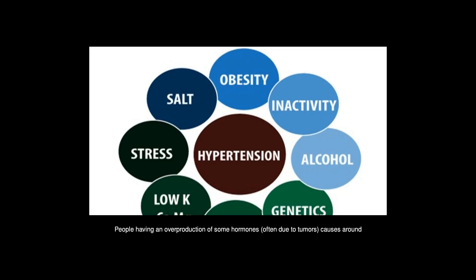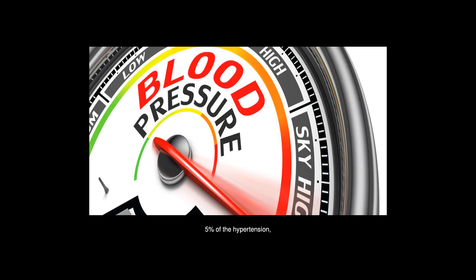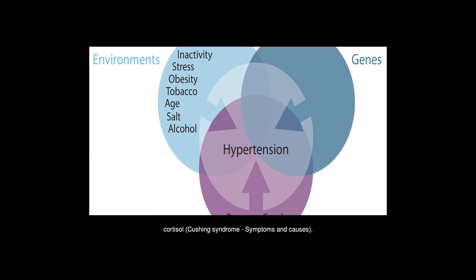People having an overproduction of some hormones, often due to tumors, causes around 5% of the hypertension. For example: Adrenaline (pheochromocytoma), Cortisol (Cushing syndrome), Aldosterone (primary aldosteronism).